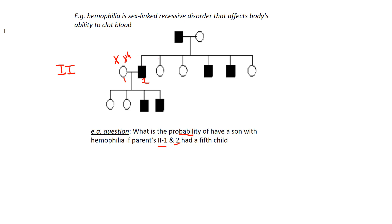She's normal, so she has a normal X chromosome. X with a little h is hemophilia. He's affected, so he has X^h Y. So if they were to have another child, what is the probability of them having a son with hemophilia?